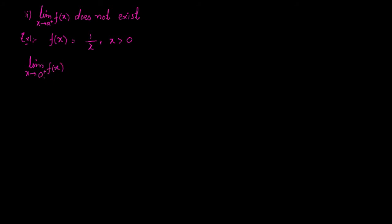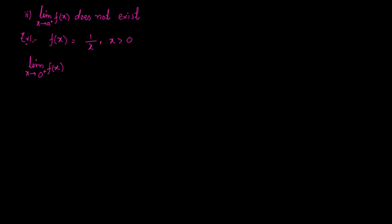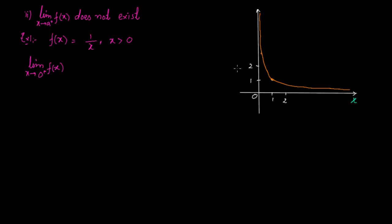In order to examine this limit, let me draw the graph of this function. Here is the x-axis and here is the y-axis, and this curve represents the graph of the function. We see that at x = 1 the value is 1; at x = 1/2, the value is 2; at x = 1/3, the value is 3. And as we go close to zero, the function goes on increasing.